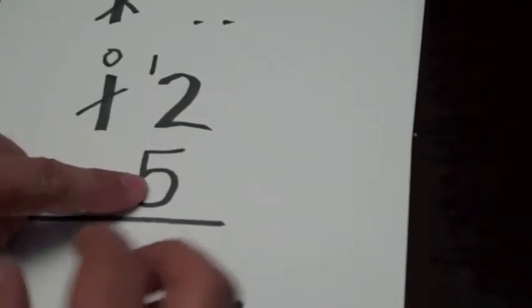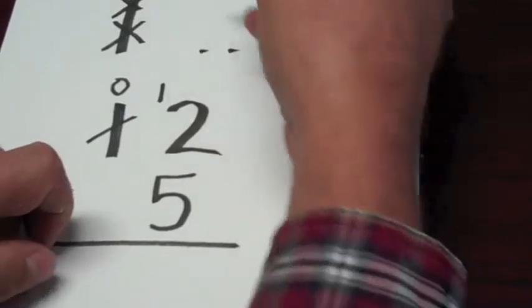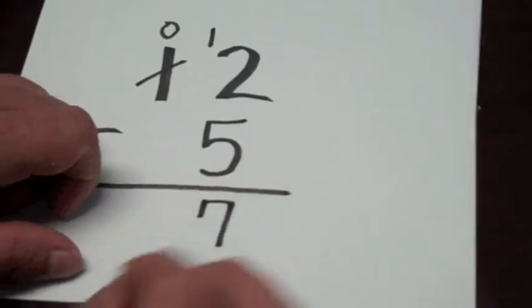I can take five away from the ten directly. I'll have five left and two ones for a total of seven.